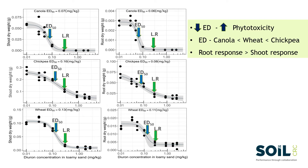So from the results of the dose-response curves, we can say that the lower the ED50 values, the higher the phytotoxicity of the herbicides. When we compare the effective dose values among different crop species, we can see that canola crop has the smallest values, followed by wheat and chickpea. Although diuron herbicide is a photosynthesis inhibitor, in my study all tested crops show their root response is much greater than shoot response.